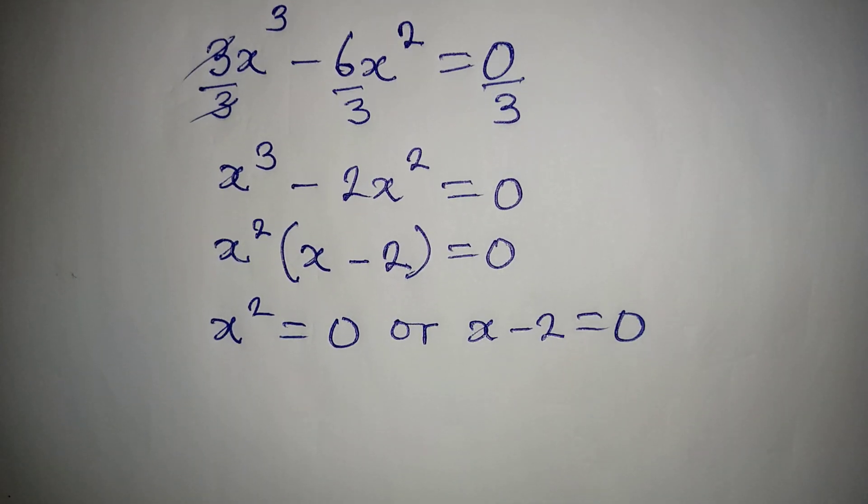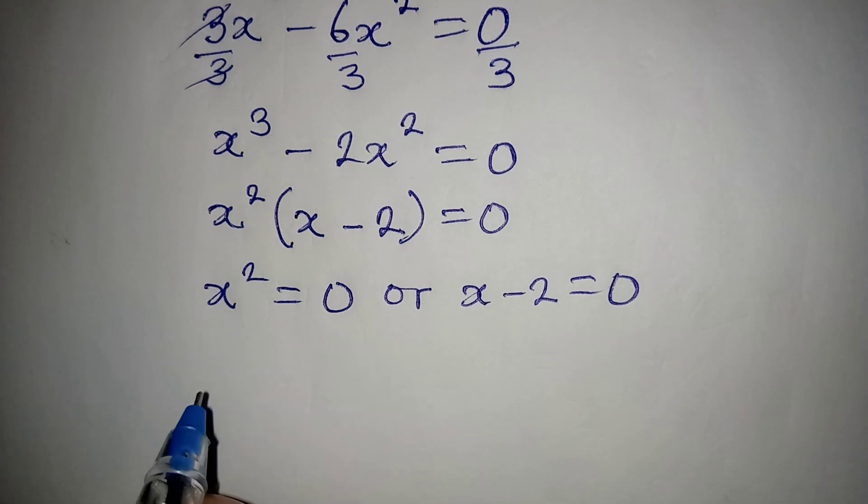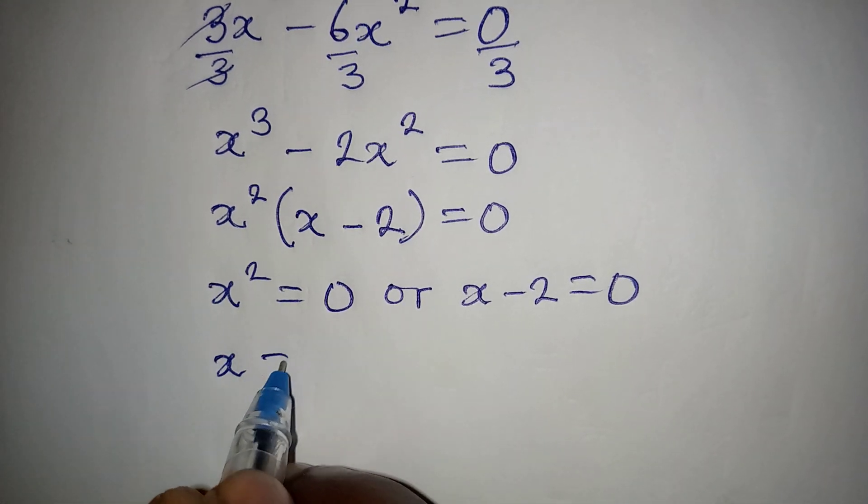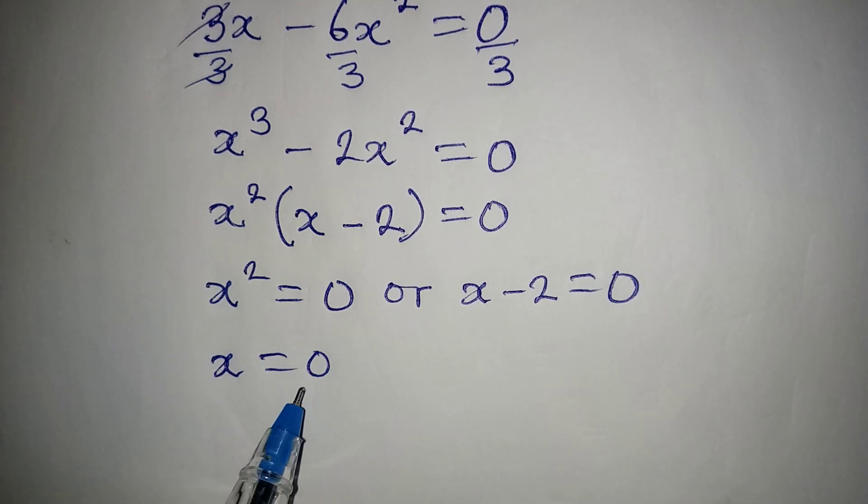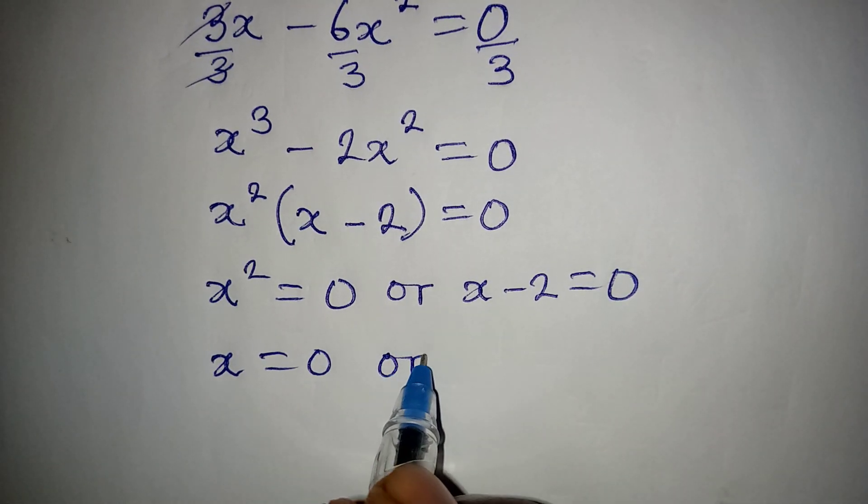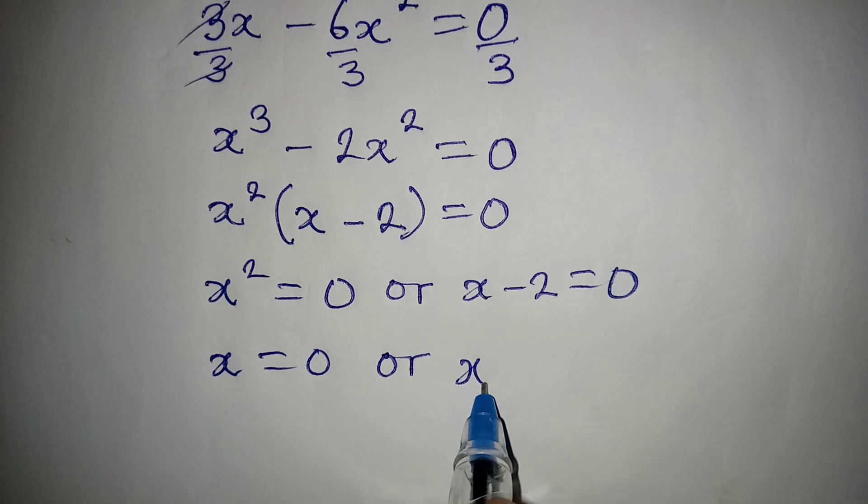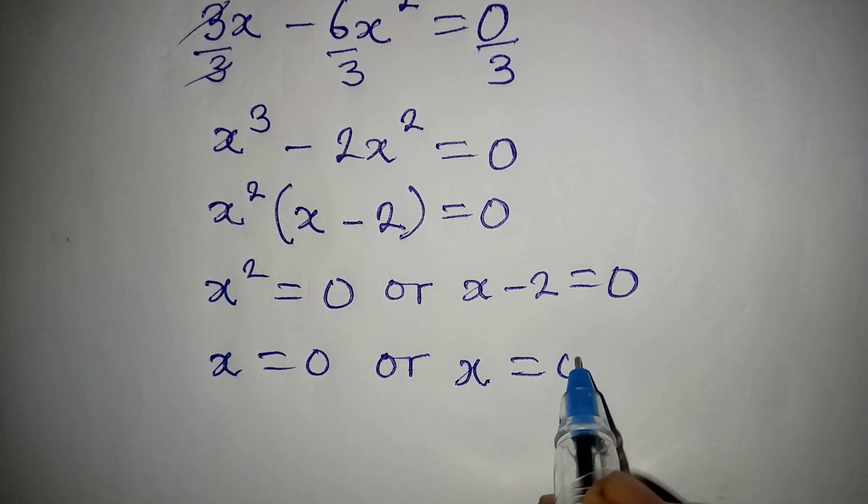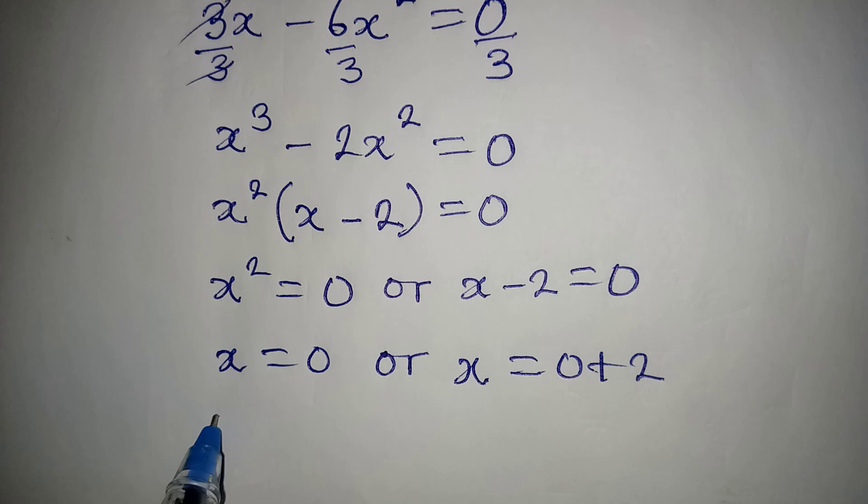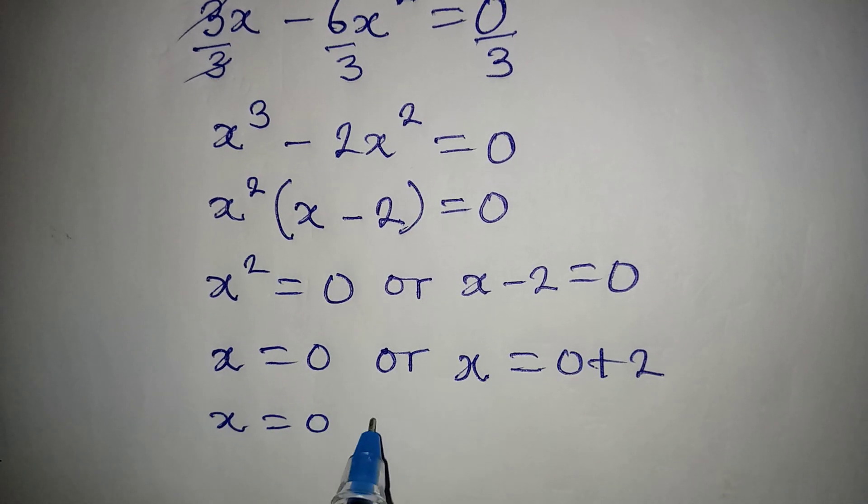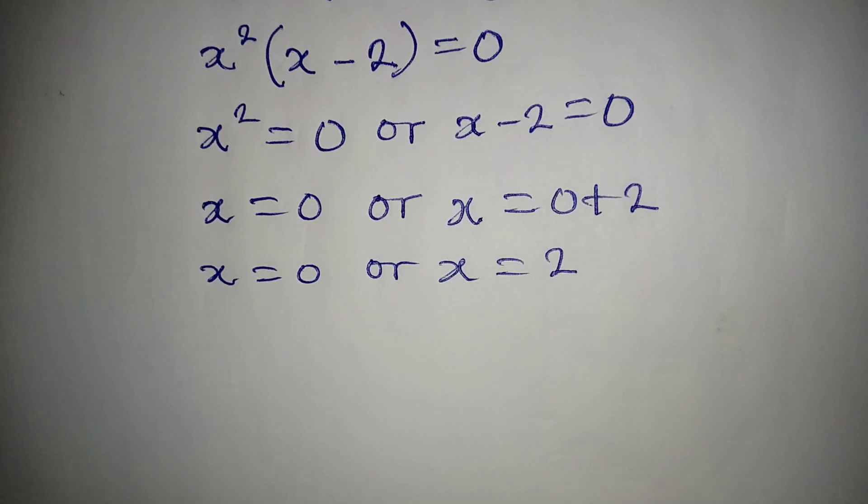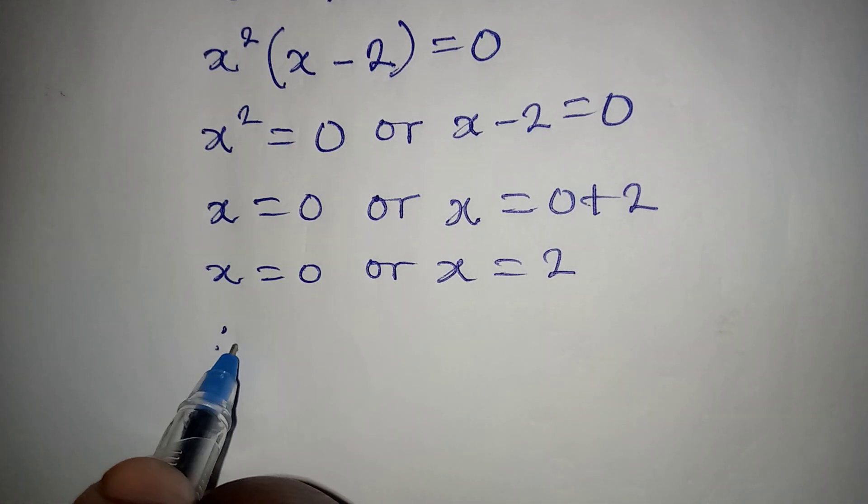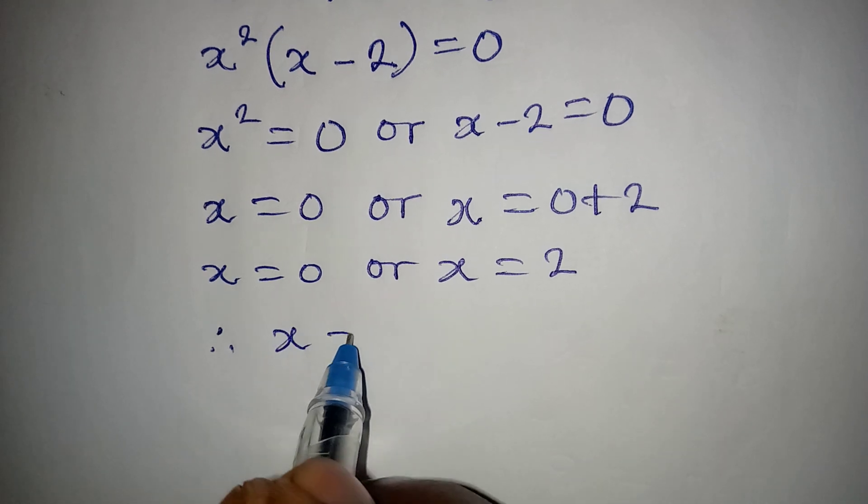And then from here, x is equal to 0 because even if you get the square root of 0 it will still give you 0. Or on this side, x will be equal to 0 plus 2. So x equals 0 or x equals 2.